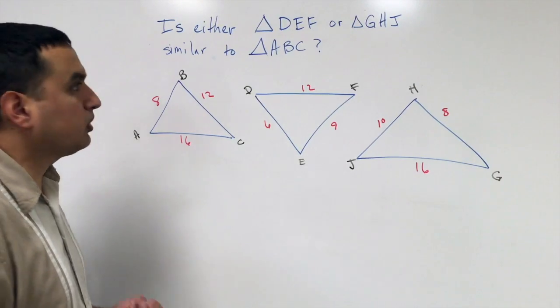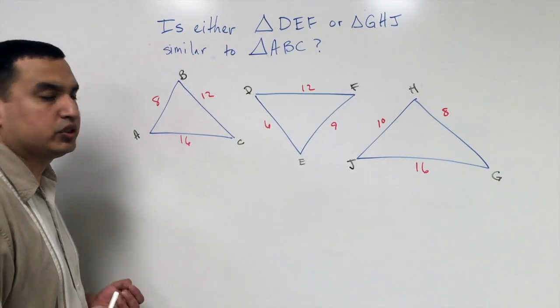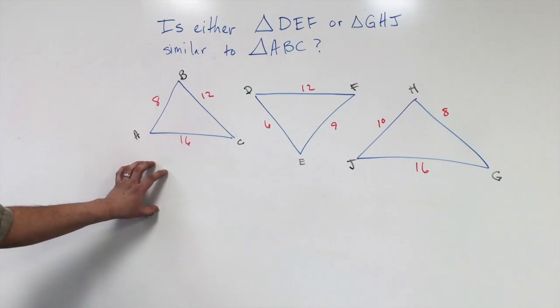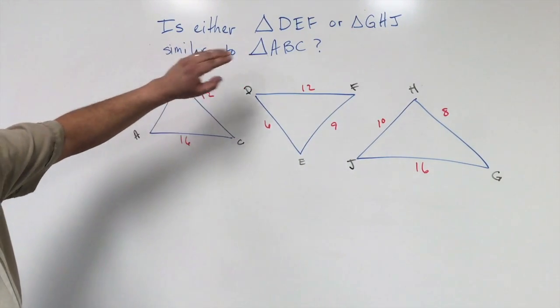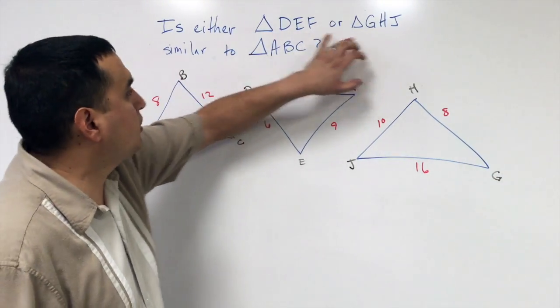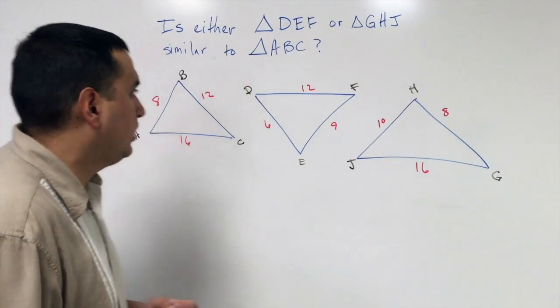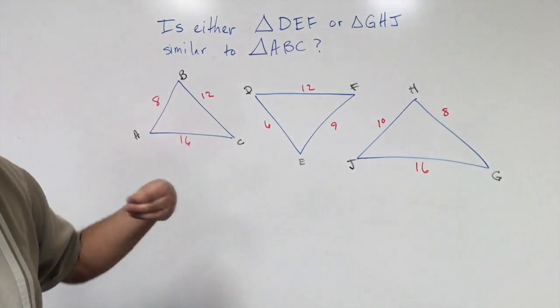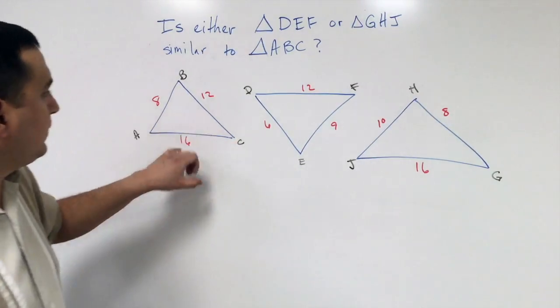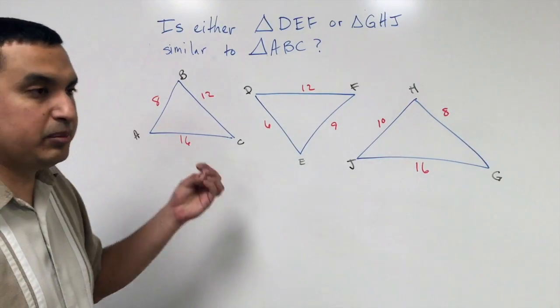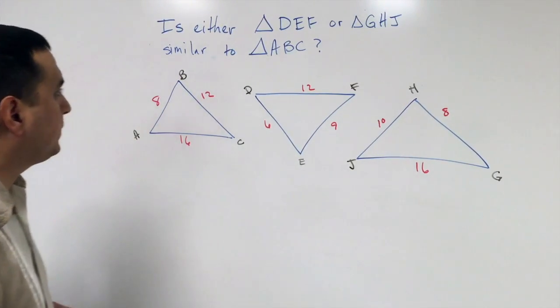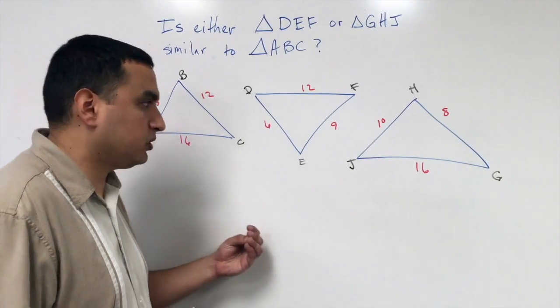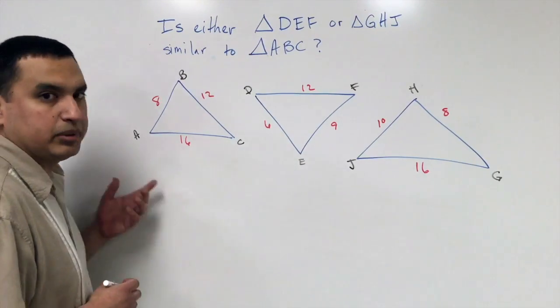With this section we're looking at two different ways to show triangles are similar. With this problem we're looking at whether Triangle DEF or Triangle GHJ is similar to Triangle ABC. If I look at these triangles, I don't know anything about the angles, so what I do have is the sides, and that's going to be how we solve this, because remember that the corresponding sides have to be proportional in order for us to use similarity.